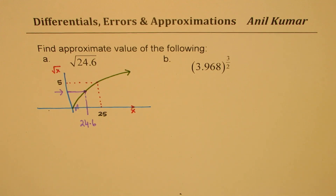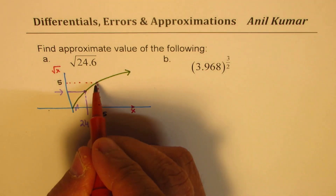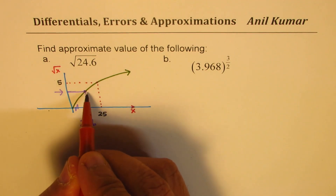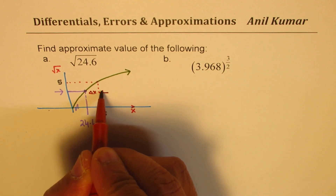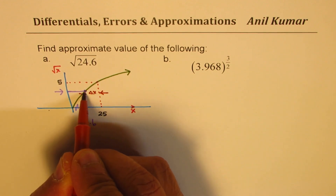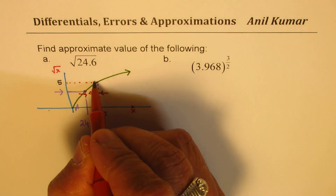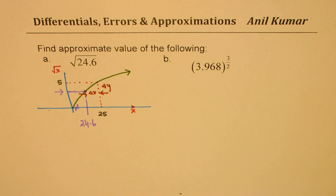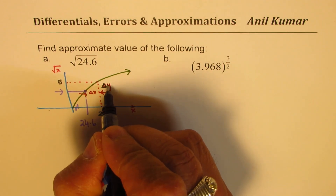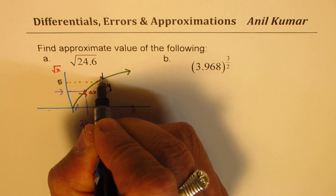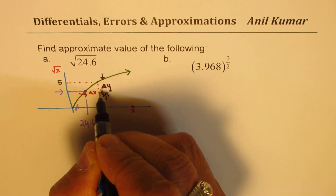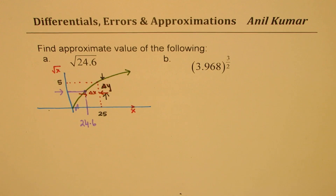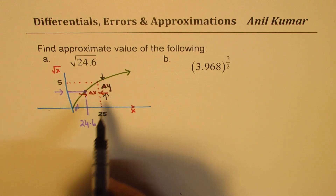We know that this point, 24.6, is slightly away from the point whose perfect square root is known to us. So that is the distance delta x between the two. And the difference in the y value is delta y. So delta y is this difference — that is the change which we want to figure out.